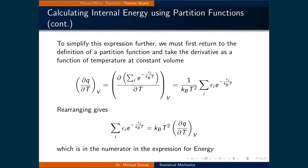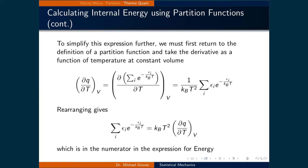To simplify this expression further, we must first return to the definition of the partition function and take the derivative as a function of temperature at constant volume. The partial derivative of Q with respect to T at constant volume is the derivative of the sum over i of e to the power of negative e_i over k_B T, which gives 1 over k_B T squared times the sum over i of e_i times e to the negative e_i over k_B T. Rearranging, the sum over i of e_i times e to the negative e_i over k_B T equals k_B T squared times the partial derivative of Q with respect to T at constant volume.